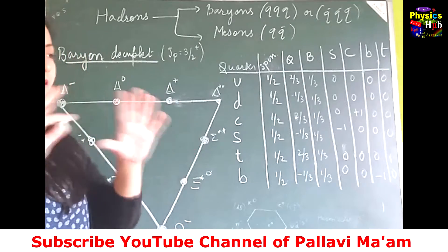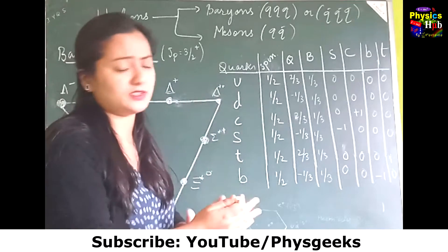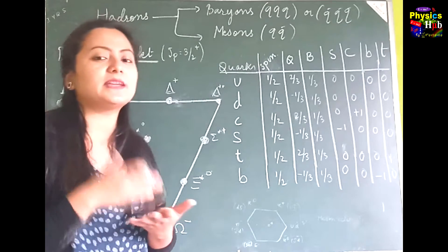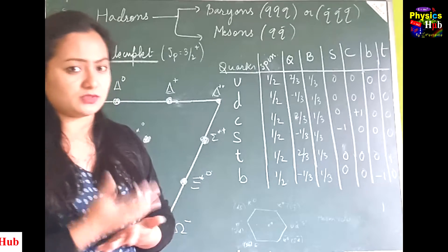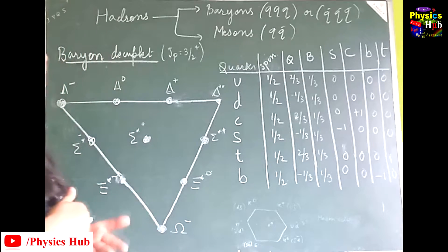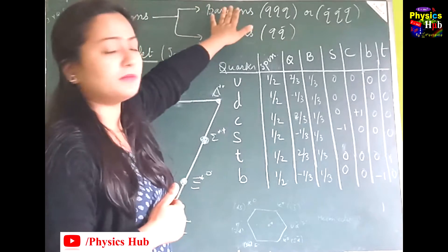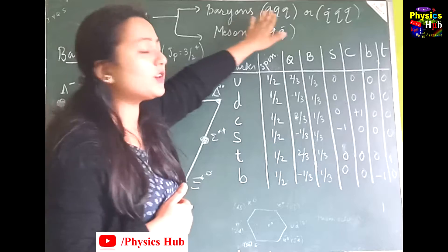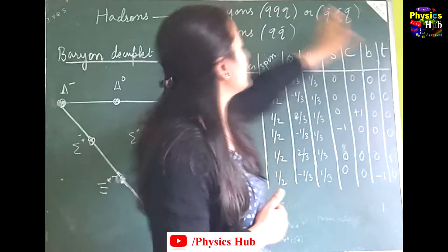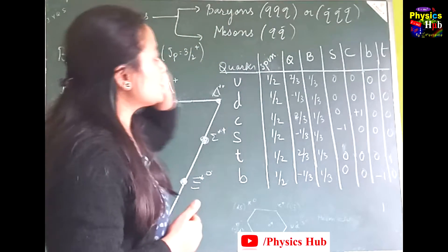Particles are divided into two branches: leptons and hadrons. Leptons are elementary particles — they are not made up of quarks. Hadrons, on the other hand, are constituted particles made up of quarks. Hadrons have two types: baryons and mesons, based on their quark composition. Baryons are made up of three quarks or three antiquarks, whereas mesons are made up of a quark and an antiquark.